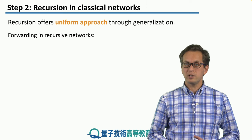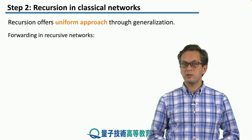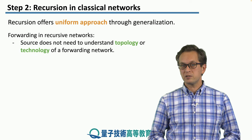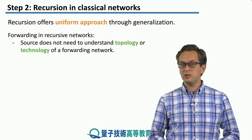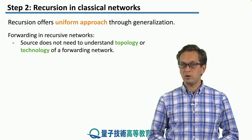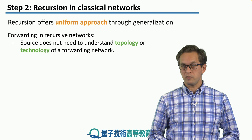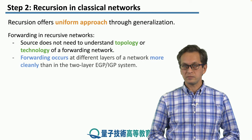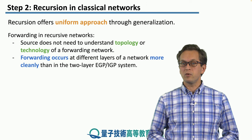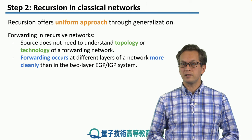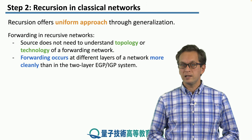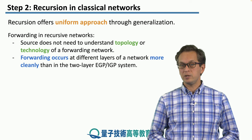Forwarding in recursive networks is guided by two principles. The first is that the source does not need to understand the topology or the technology of a forwarding network. The second is that forwarding occurs at different layers of a network more cleanly than in the two-layer EGP, IGP system.